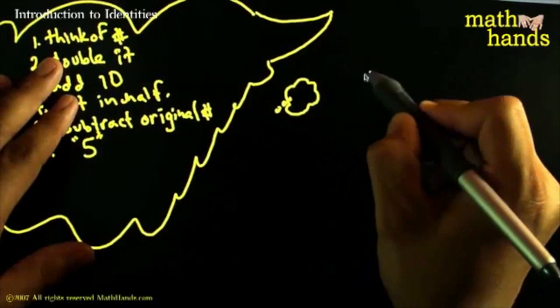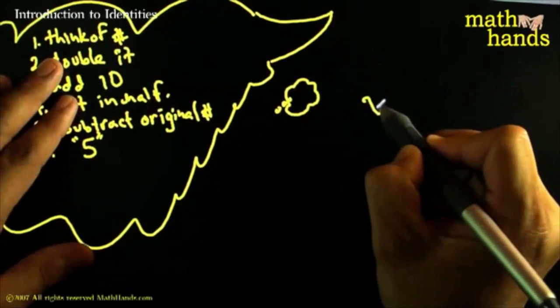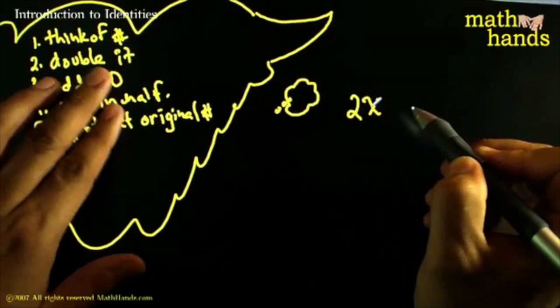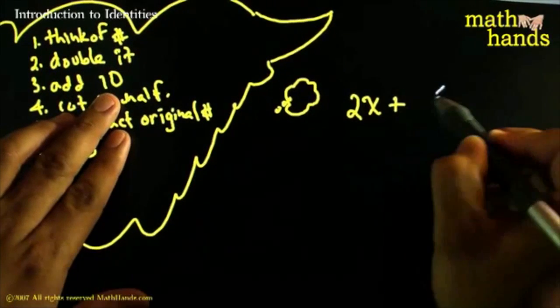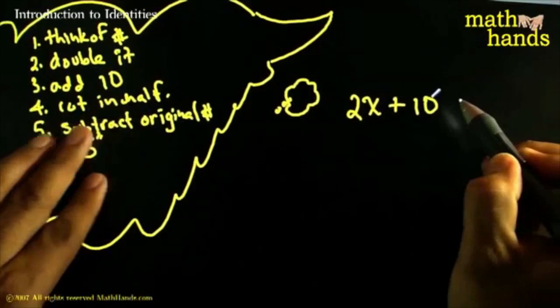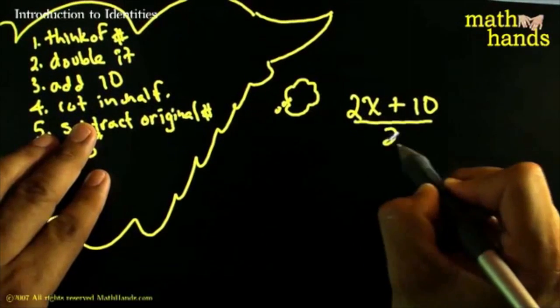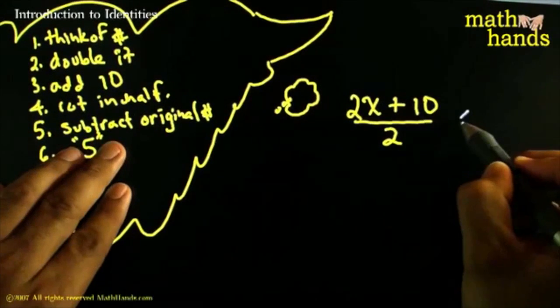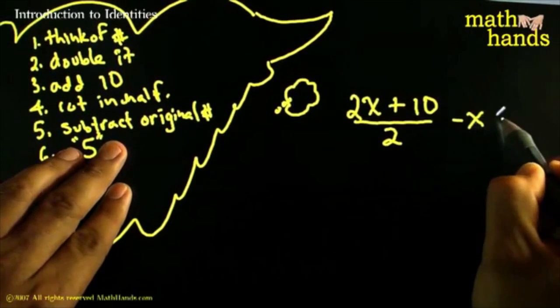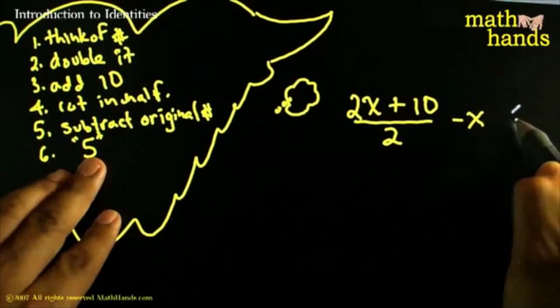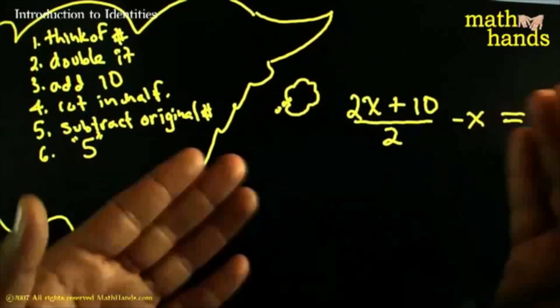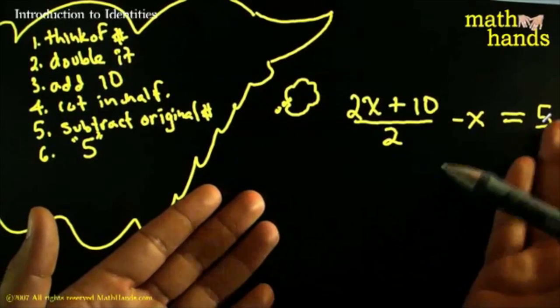So she would say, think of a number. Or let's call that x. And then double it. Well, that's 2 times x. And then you add 10 to it. That would be 2 times x plus 10. And then you cut it in half. You would divide that by 2. And then you subtract the original number that you thought of. Let's subtract the original x. And she's telling me that no matter what original number I thought of, this is always equal to 5.